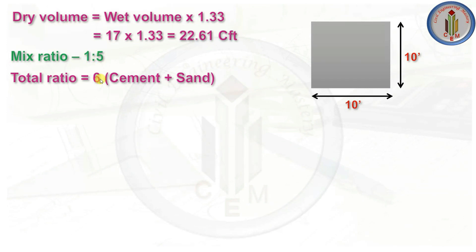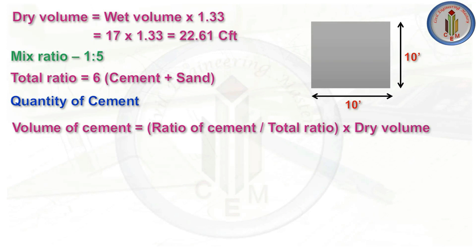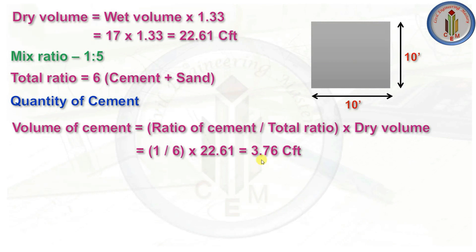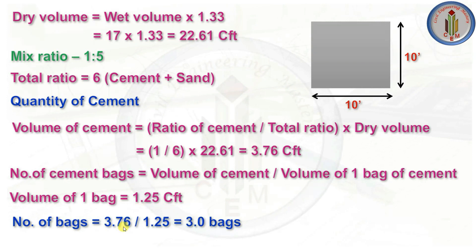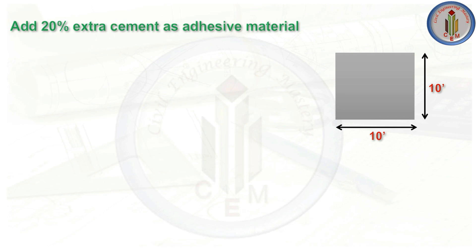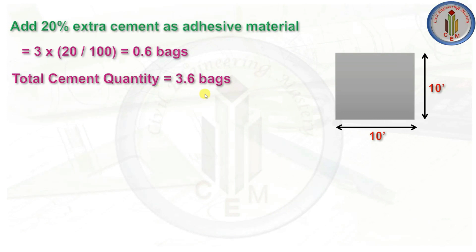Mix ratio is 1:5, so total ratio = 1+5 = 6. Volume of cement = (1/6) × 22.61 = 3.76 cft. Number of cement bags = 3.76 ÷ 1.25 (volume of 1 bag) = 3 bags. Adding 20% extra as an aggressive material allowance: 3 × 20% = 0.6 bags. Total cement quantity = 3.6 bags.